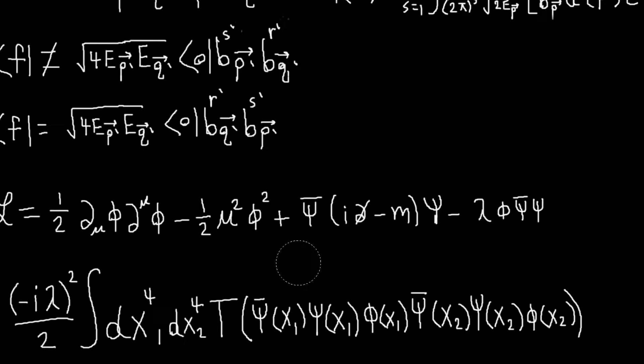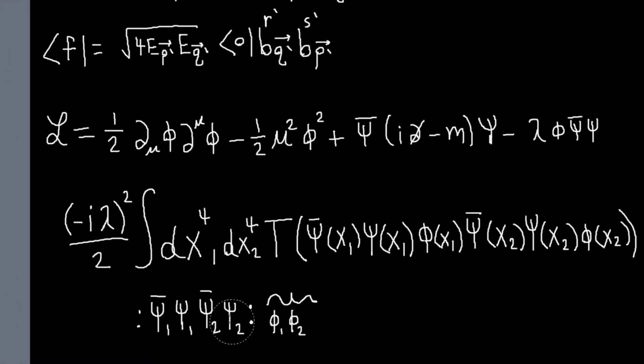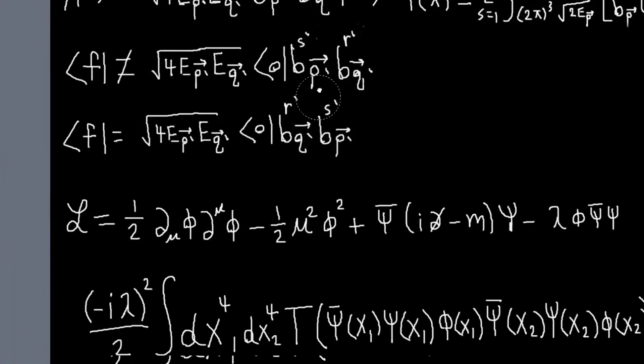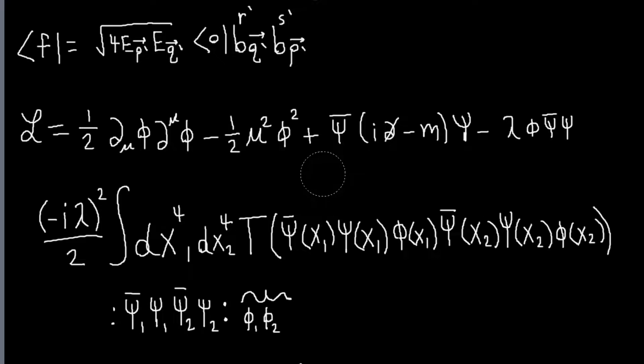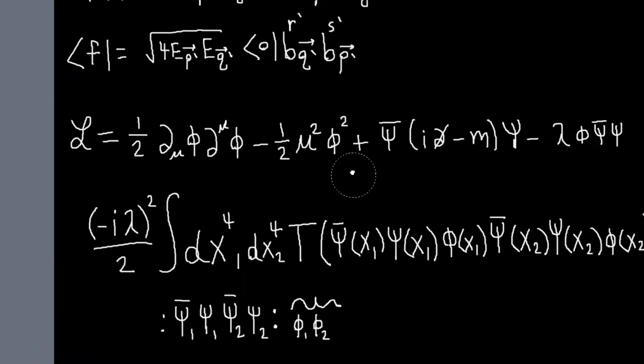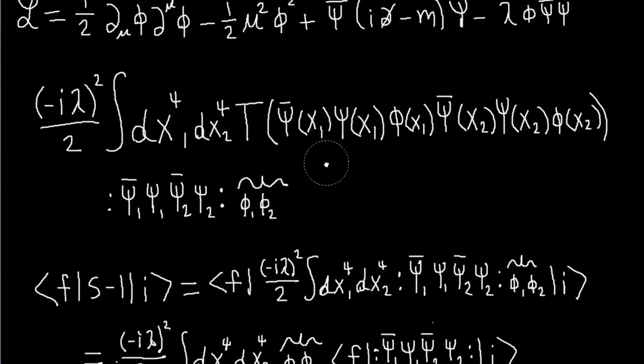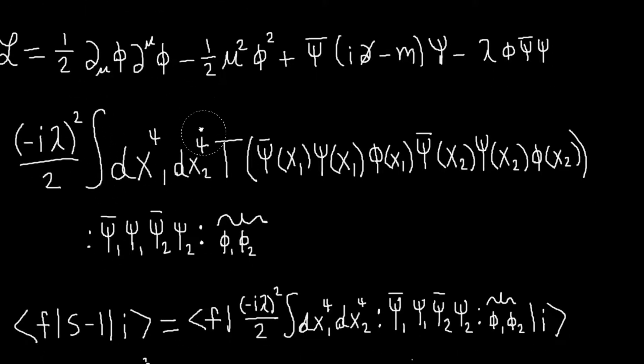So the lowest order contribution is this term. And so you have to work out what is the time ordering of this big thing. And again, it works out pretty much exactly the same way as it did for the complex scalar field. The only term that will contribute is the term involving just this contraction, so that these four operators are left over. And so we have two psi bars and two psi, so the psi will destroy the B particles, and then psi bars will create two more B particles.